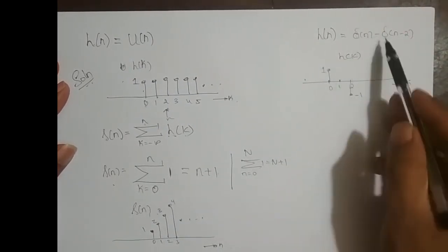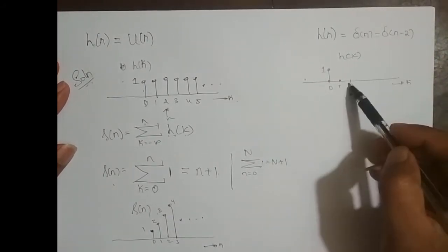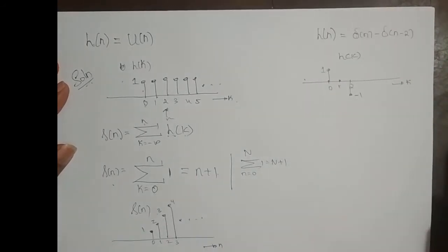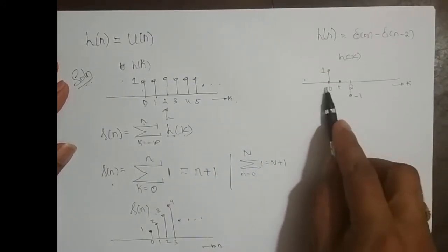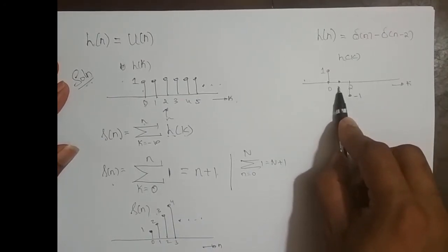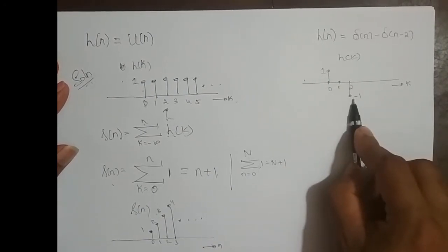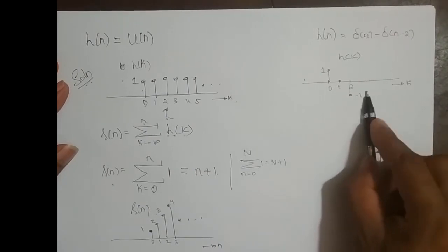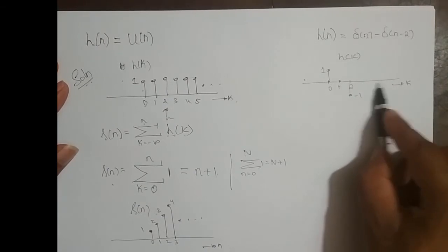Delta of n at this amplitude — delta of n minus 1 is not there, so at 1 it is 0. Delta of n minus 2 is here, scaled by minus 1. So I do not have to apply the formula explicitly. Directly, if n is at 0, the step response is 1. If n is at 1, the step response is also 1, because 1 plus 0 is 1. If n is at 2, the step response is 0 — how? 1 plus 0 minus 1. If n is at 3, again 1 minus 1 is 0. If n is at 4, 1 minus 1 is 0. If n is at 5, 1 minus 1 is 0.